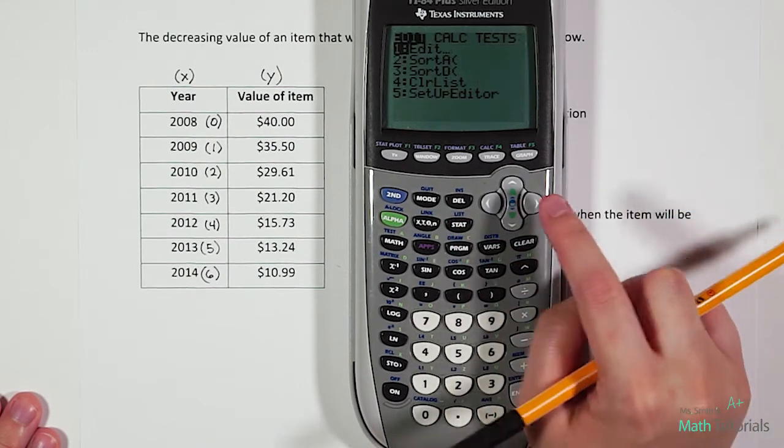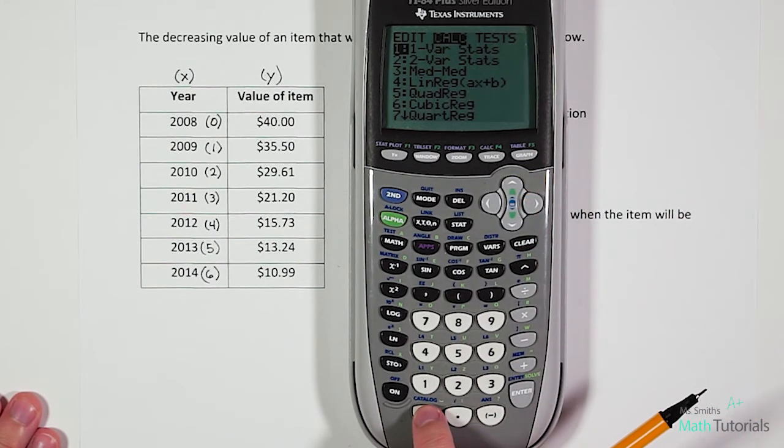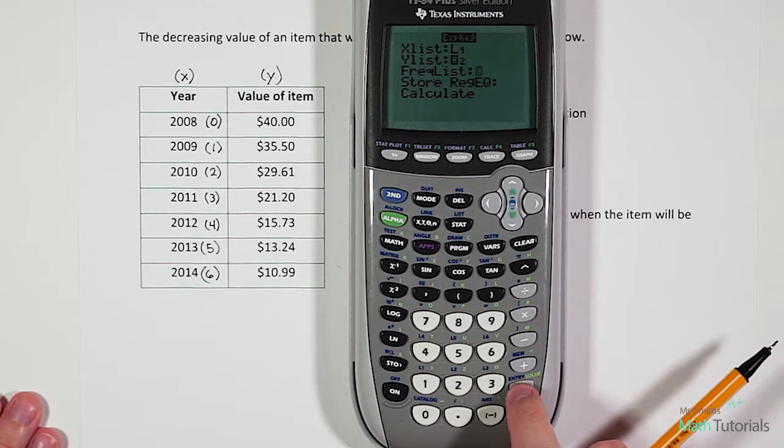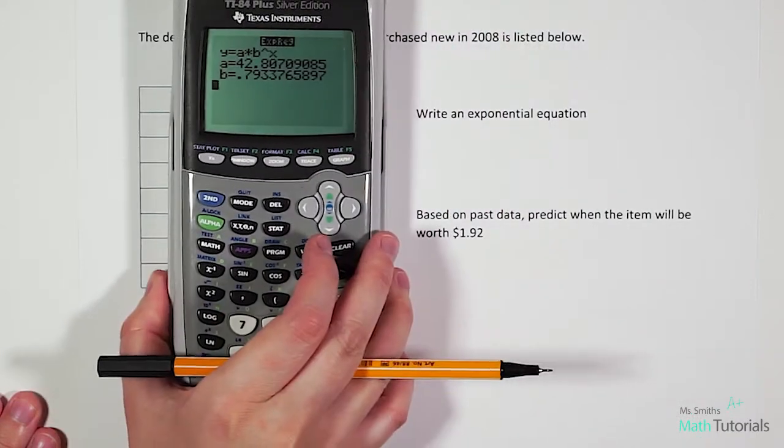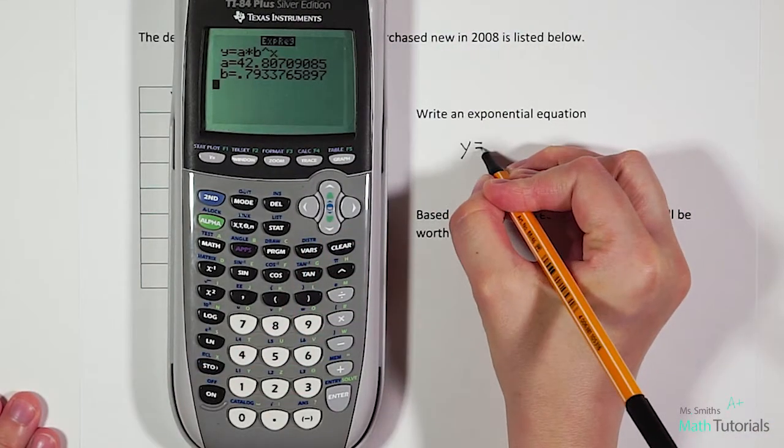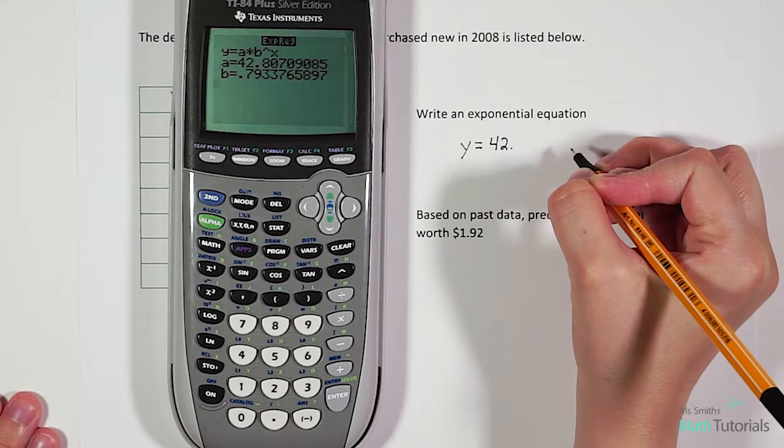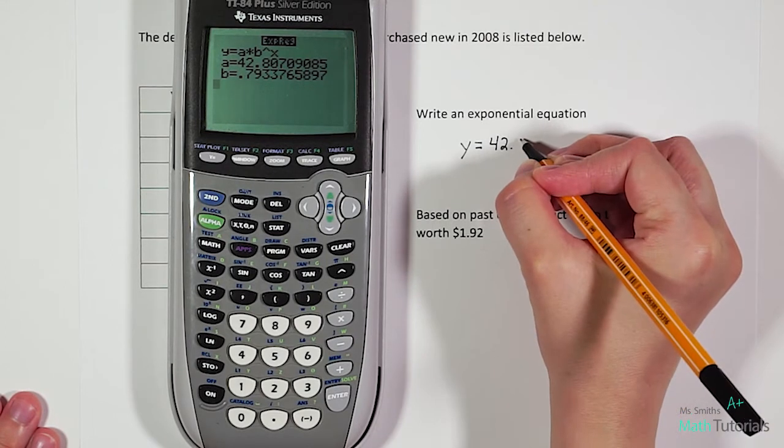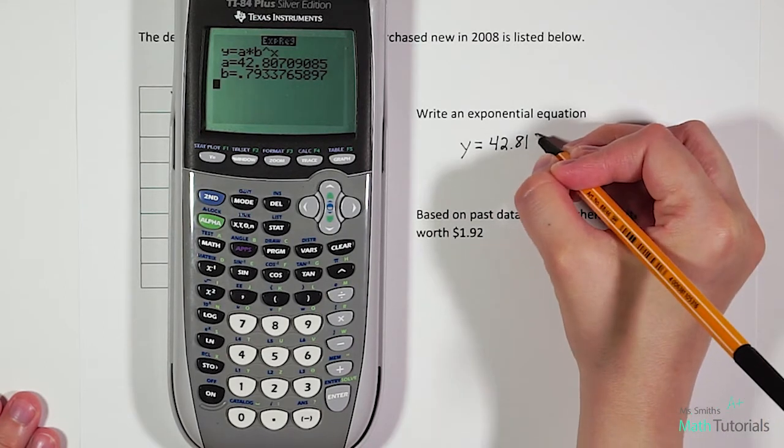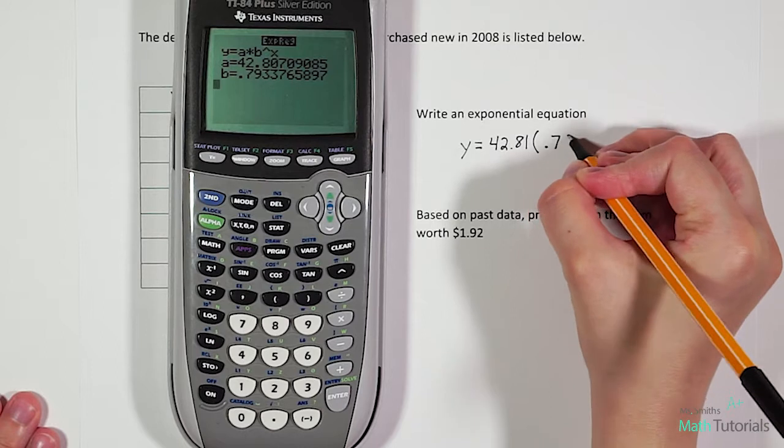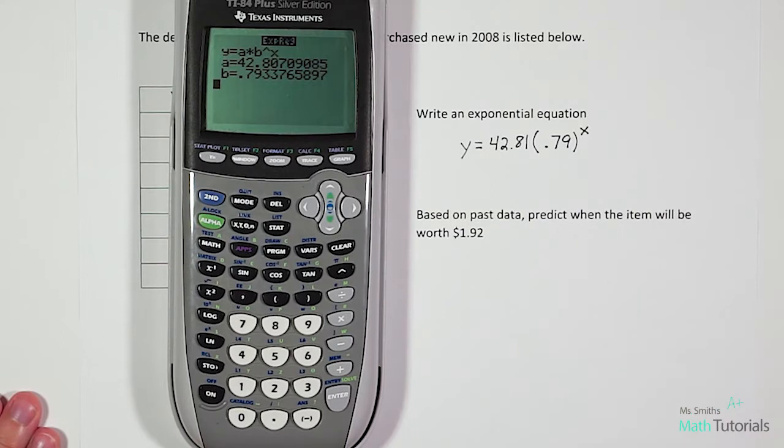We can hit stat again, right arrow over to our calc tab, and then we can just hit zero for exponential regression. We're going to hit enter through all this. And there is our equation. So we've got our y equals. Now in the place of A, it says to put 42, and again, let's just round to the nearest hundredth, 42.81. In our B value in parentheses, we're going to put 0.79. And then for X, we just keep it X for our basic exponential equation.